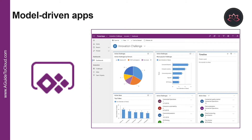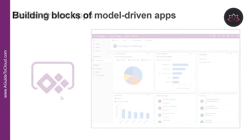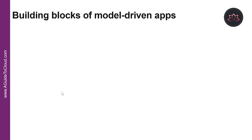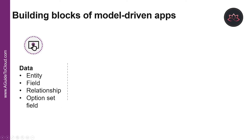Let's understand the building blocks for model-driven apps. A model-driven app consists of several components that you select by using the app designer. The first is Data. These are the different data components that make up the model-driven app: entity, field, relationship, optional set of field data, etc. This determines what data the app will be based upon.